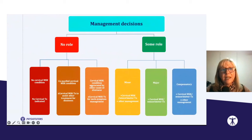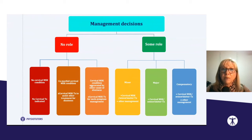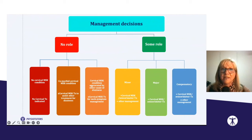For management decisions: if there is no cervical musculoskeletal condition, no cervical treatment is indicated. If there is no direct role but a comorbid cervical musculoskeletal condition exists, we may treat the cervical system to assist other treatments for dizziness. For example, if someone has a peripheral vestibular problem but cannot perform vestibular rehabilitation well because of a neck condition limiting movement, treating the neck can facilitate that rehabilitation — treating the neck not to treat the dizziness directly, but to enable more effective vestibular treatment.